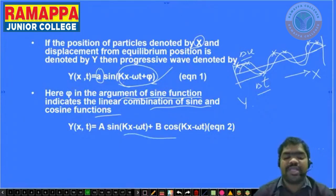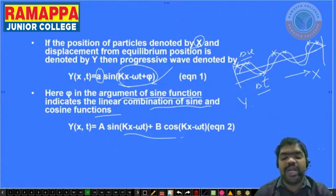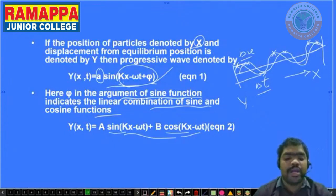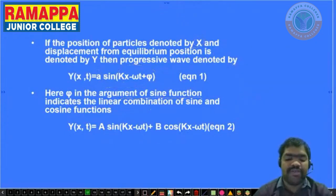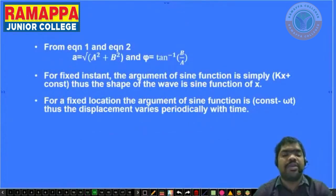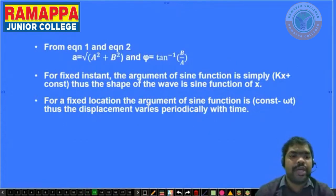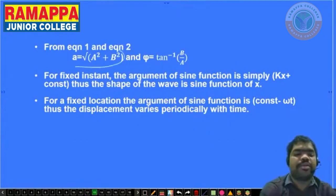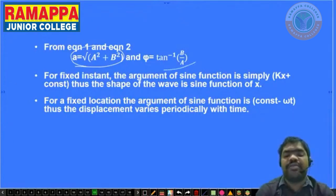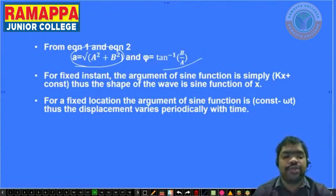The equation can also be written as y(x, t) = a sin(kx − ωt) + b cos(kx − ωt). By solving these two equations, we get A equals the square root of (a² + b²). In the same way, the argument phi is nothing but tan⁻¹(b/a). These are the results from those two equations.